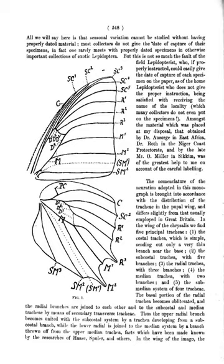Antennae: long feelers situated on the head and close to the eyes; they are however not tactile but used for detecting airborne scents and currents. In Papilionoidea the antennae end in bulging tips called clubs. In Hesperioidea they have hooked tips and the club is found just before the tip. In some Lycaenidae like the genus Liphyra, the antennae taper gradually.